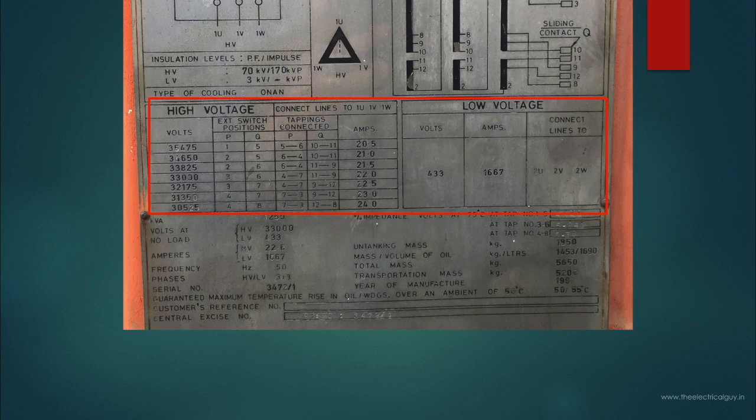Moving on here you can see the details of taps which are provided on the high voltage winding are given. In case if your high voltage is fluctuating then accordingly you can adjust the taps and get the constant output at secondary that is 433 volts. This detail shows the connections where you have to connect your tapping to get the constant voltage and also gives you the amperes based on the connection at high voltage.